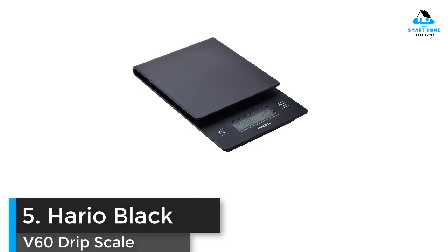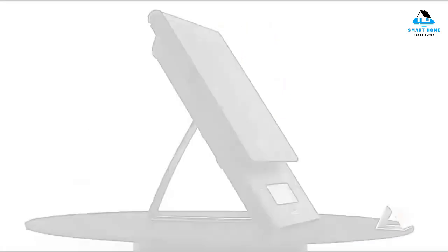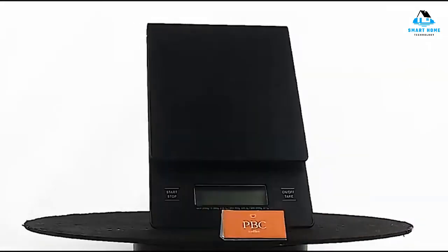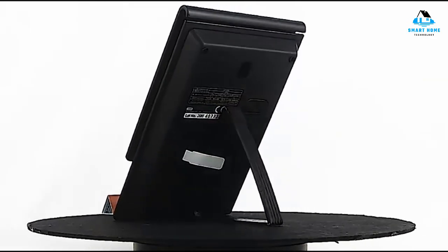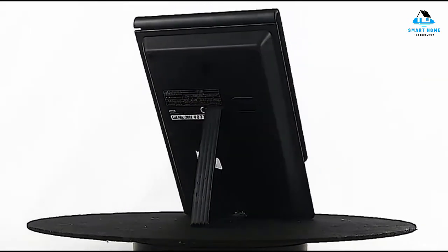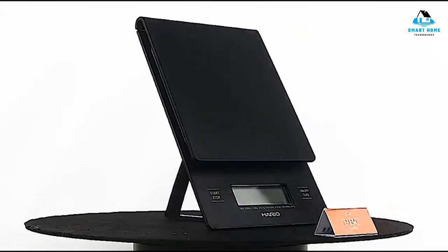Number 5. Hario V60 Drip Scale. When it comes to brewing excellent pour-over coffee, timing becomes one of the most important factors. This scale includes a built-in timer to help you follow and repeat your recipes accurately. The LCD has a dedicated space for the measurements on the right-hand side, while the timer is located on the left, making it easily readable.